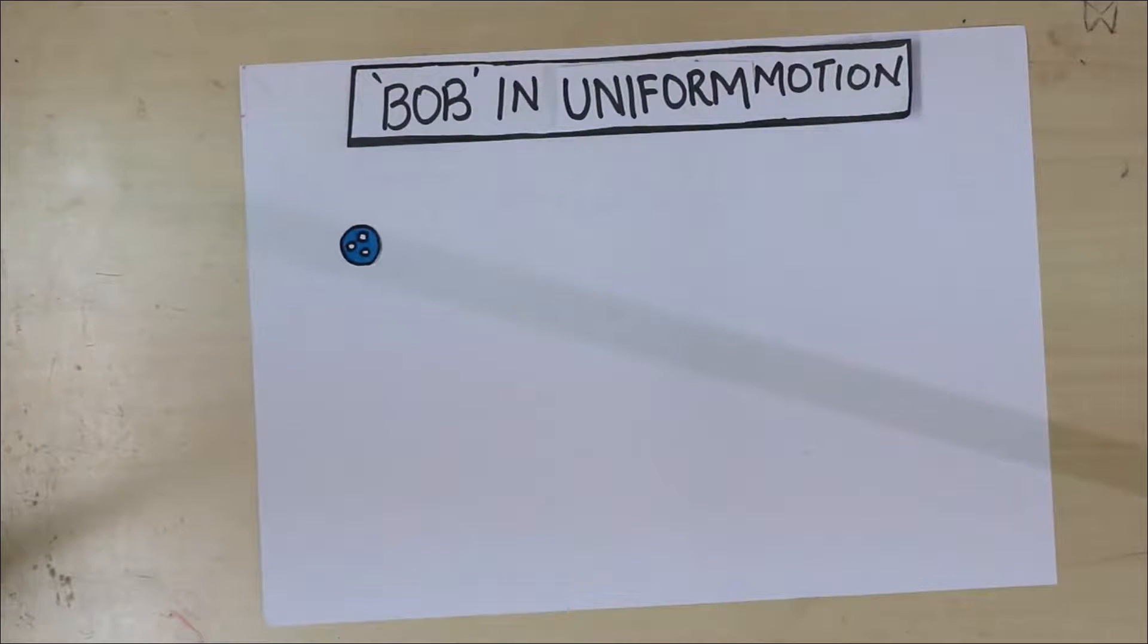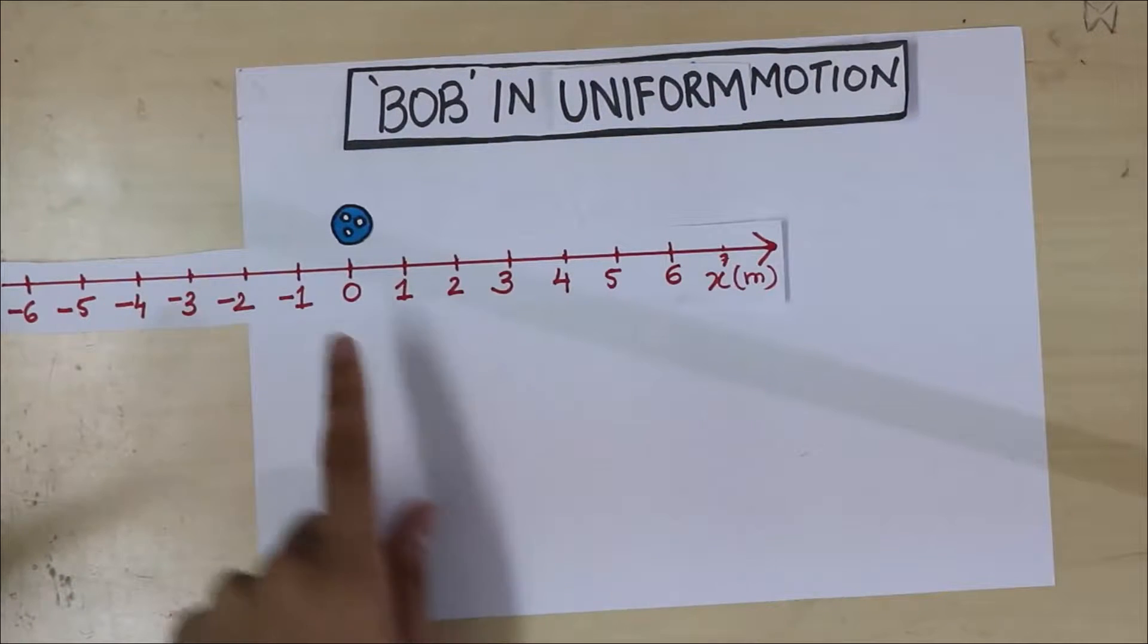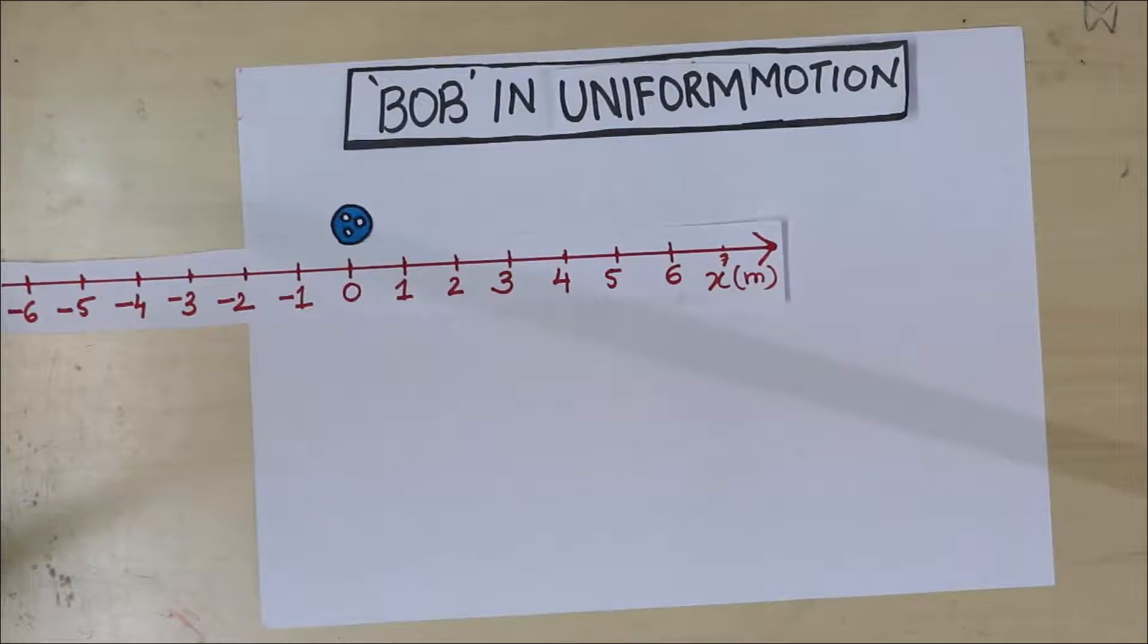But this time we're going to put an axis. Here's our axis. So here's the axis and I've kept Bob at origin and I've taken right side as positive. And here's the clock, here's going to be our ticking clock somewhere.